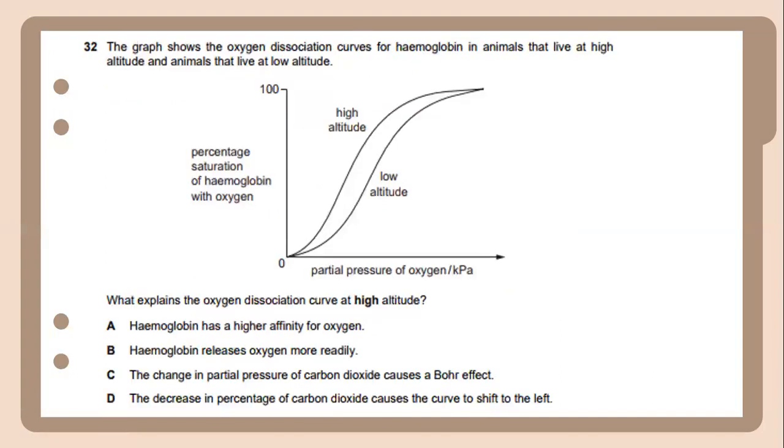The graph shows the oxygen dissociation curve for hemoglobin in animals that live at high altitude and animals that live at low altitude. What explains the oxygen dissociation curve at high altitude? Hemoglobin has a higher affinity for oxygen.